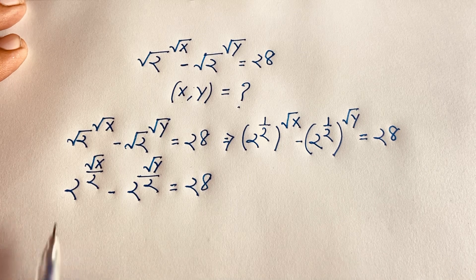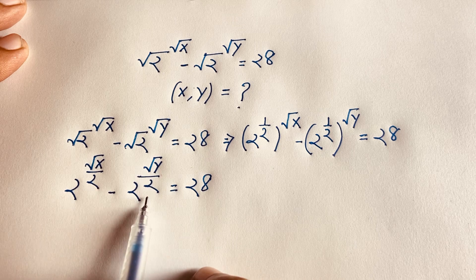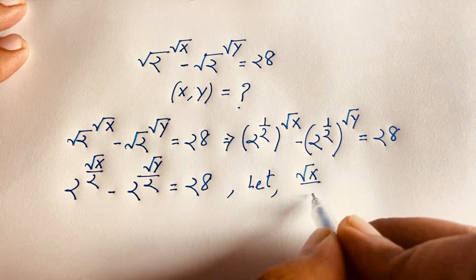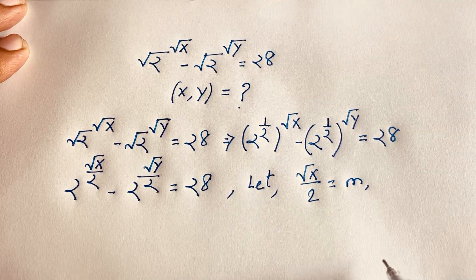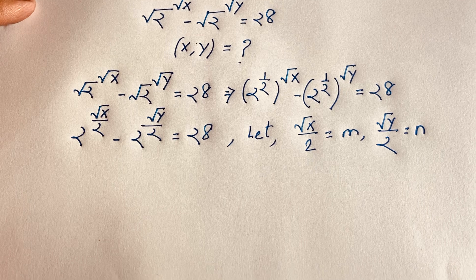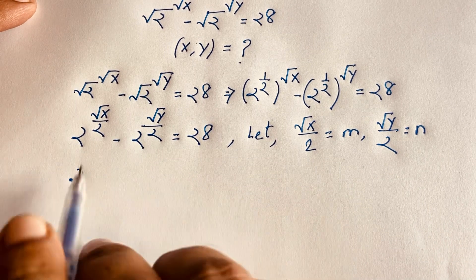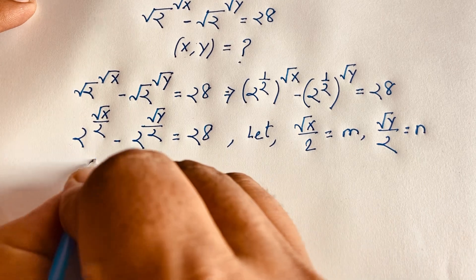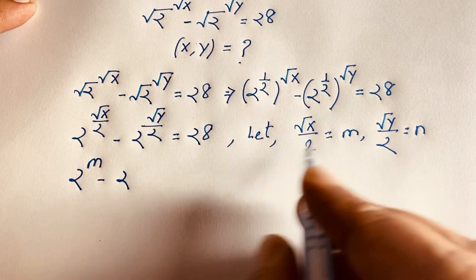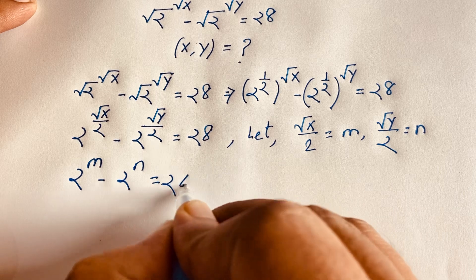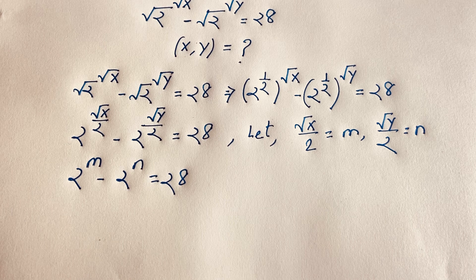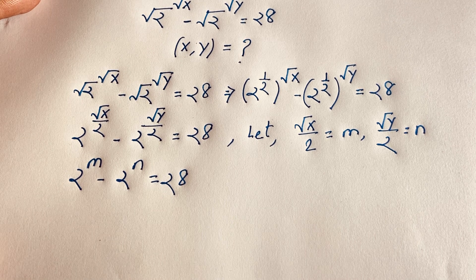Now let m = √x/2 and n = √y/2. Substituting, the equation becomes 2^m minus 2^n equals 28.